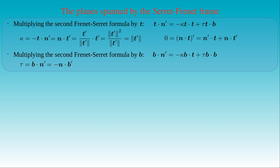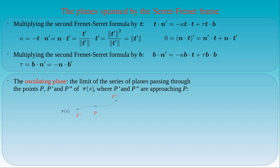Now we can introduce the concept of the osculating plane at a point P on a curve, as the limit of a series of planes passing through the points P, P', and P'' on the curve, where P' and P'' are approaching P. Thus we have a curve r(s) with an arbitrary point P, and points P' and P'' in the vicinity of P. These three points define a unique plane, provided the curve is not a straight line.